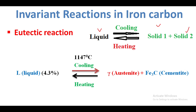In the eutectic reaction, liquid is converted to two solid solutions. The iron and carbon mixer is the liquid. The carbon content in the liquid is 4.3 percentage of carbon. One solid is austenite and another one is cementite. So two solids form: one is austenite and another one is cementite. That is called the eutectic reaction.